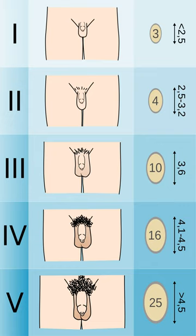Tanner 2, Breast bud forms, with small area of surrounding glandular tissue. Areola begins to widen, 10 to 11.5.